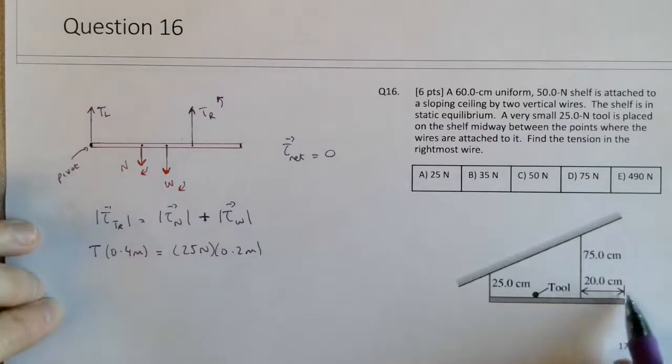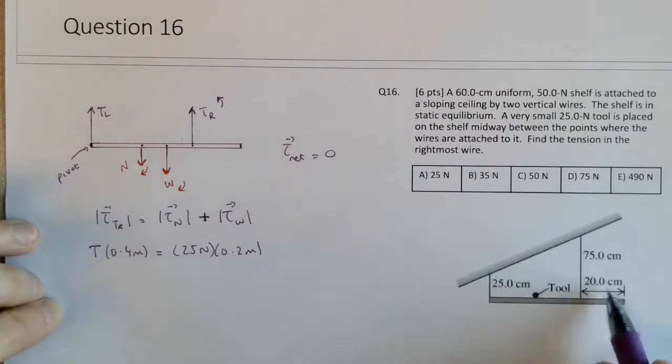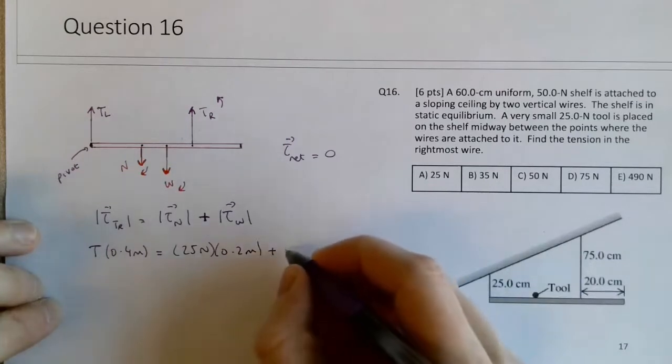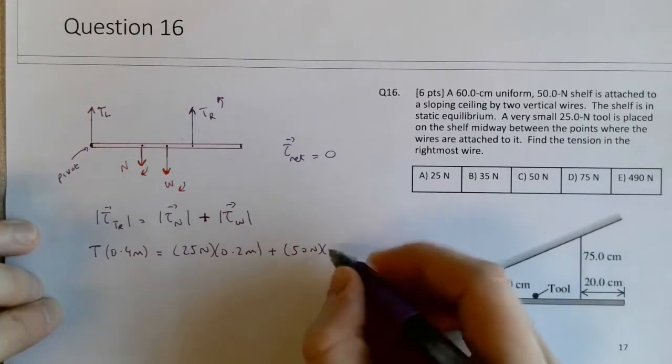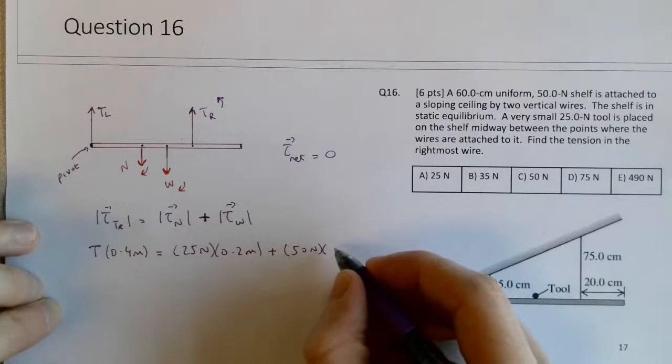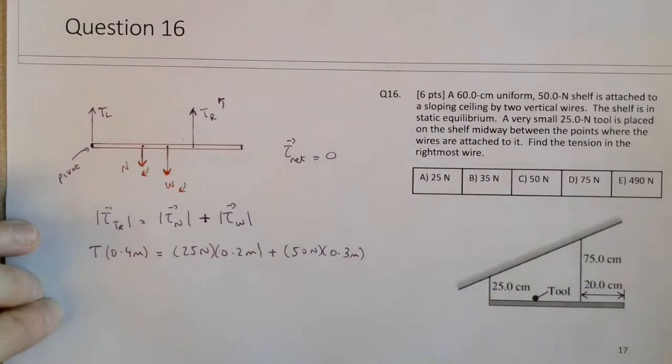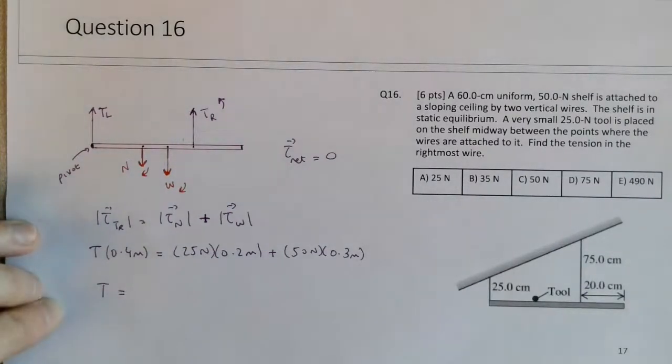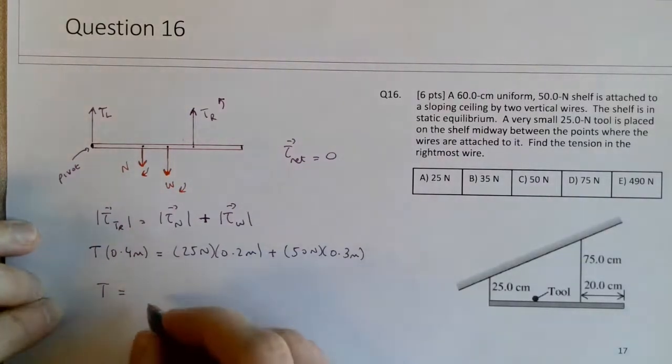So 0.2, 0.2, and 0.2, or 20, 20, and 20 gives us a 60 centimeter rod, plus the weight, which is 50 Newtons, times its distance, which would be 0.3 from the pivot.